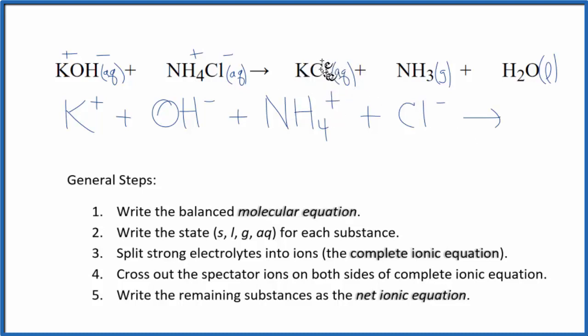For the products, we have the KCl, so we have a plus and a minus. We'll have K plus, plus the chloride ion, plus, because this is a gas, we don't split gases apart in net ionic equations, and we don't split liquids apart either. So we'll just have NH3 plus H2O. This is the complete ionic equation.